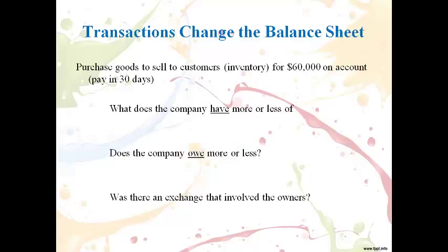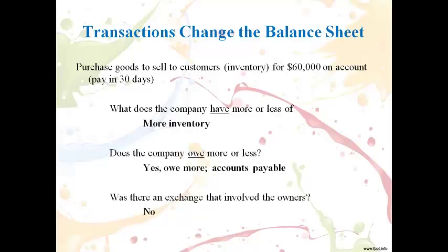The company purchased goods to sell to customers on account. Cash is not paid when the goods are purchased on account. The company has more inventory and also owes more. Inventory will increase and accounts payable, a liability, will increase also. There is no transaction directly with the owners.